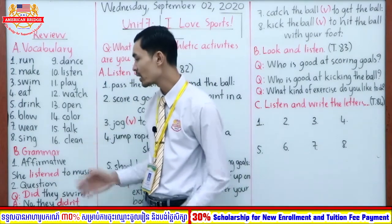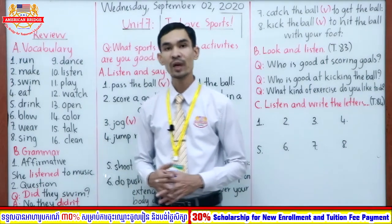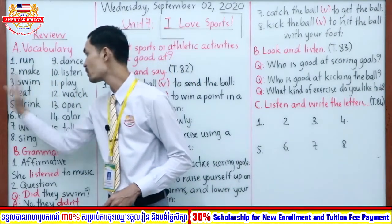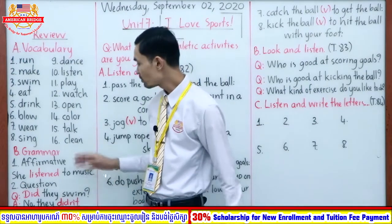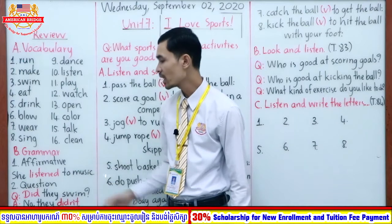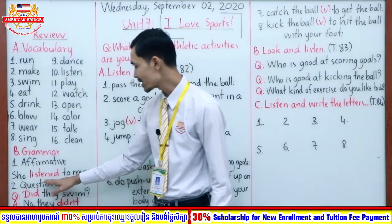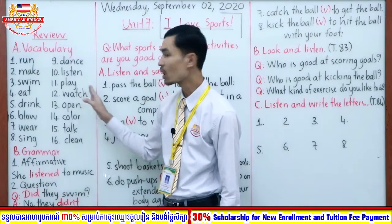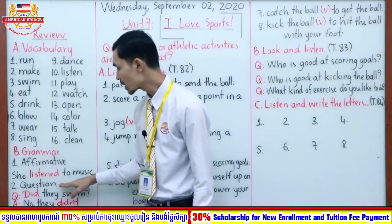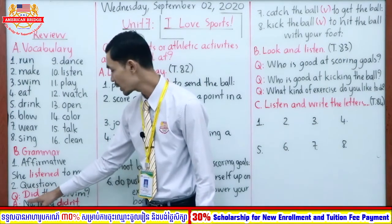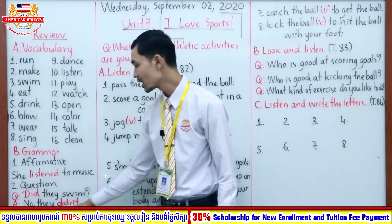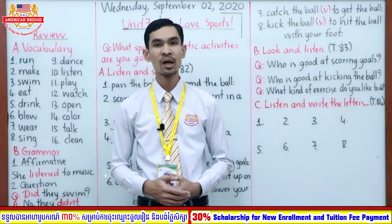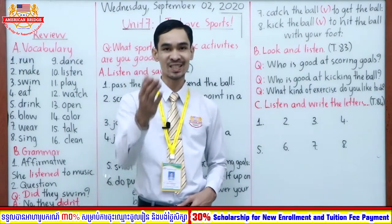And this is the grammar we learned in Unit 6, right. We focus on regular verbs and irregular verbs. These 8 verbs we call regular verbs and these 8 verbs we call irregular verbs. We have two different forms: affirmative and question. Affirmative example: she listens to music — most verbs you add -ed. Yes/no question: you start with 'did.' Did they swim? No, they didn't. You use 'didn't' if no; if yes, you use 'did.' Yes, they did.